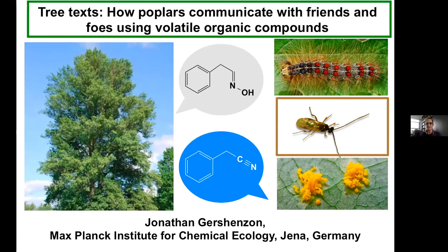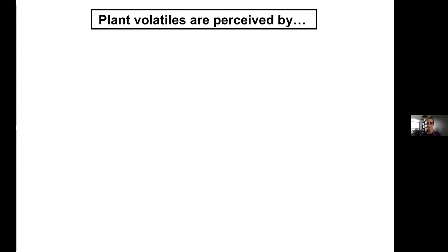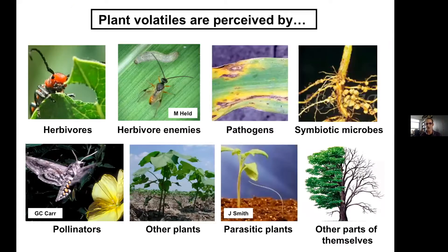A lot of ecologists jumped on this. The main discovery was that not only flowers and fruits release volatiles, but all plants release some compounds — especially after herbivore damage. After all this work, it became clear that many different organisms interact with plants through volatiles. These are organisms that detect volatiles and respond to them.